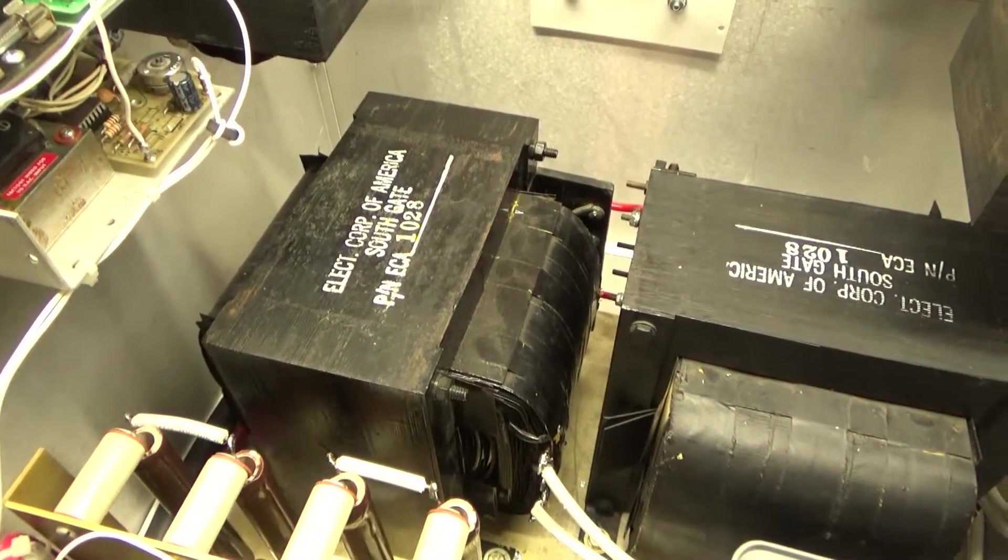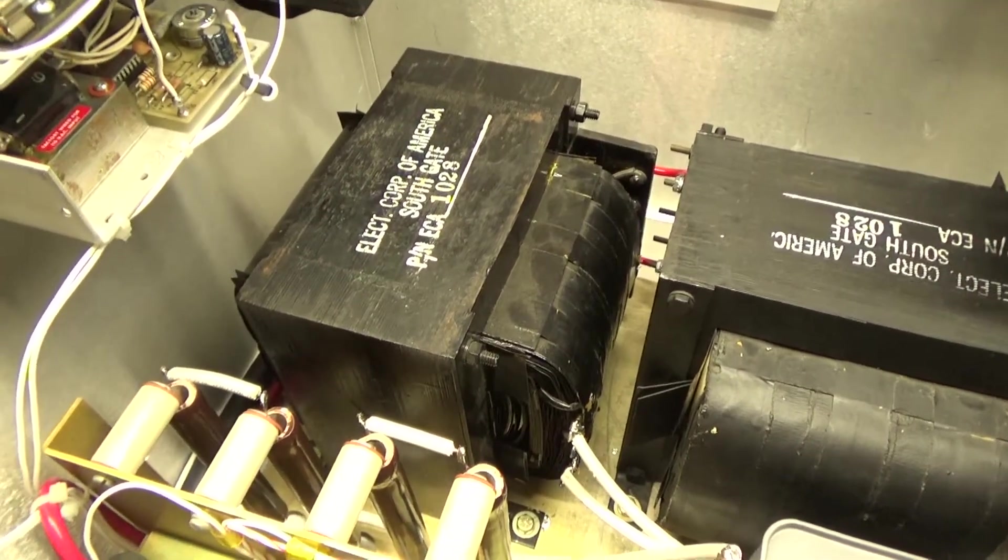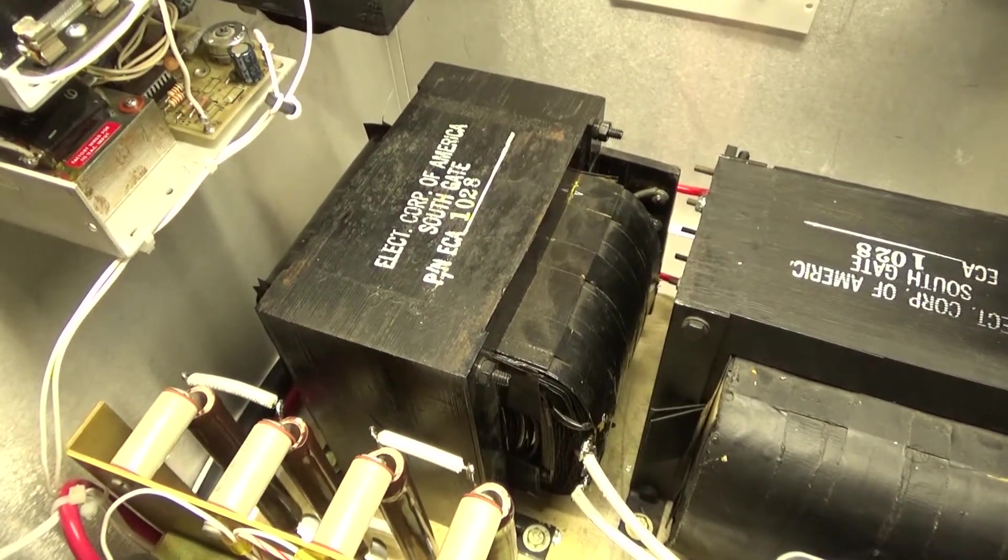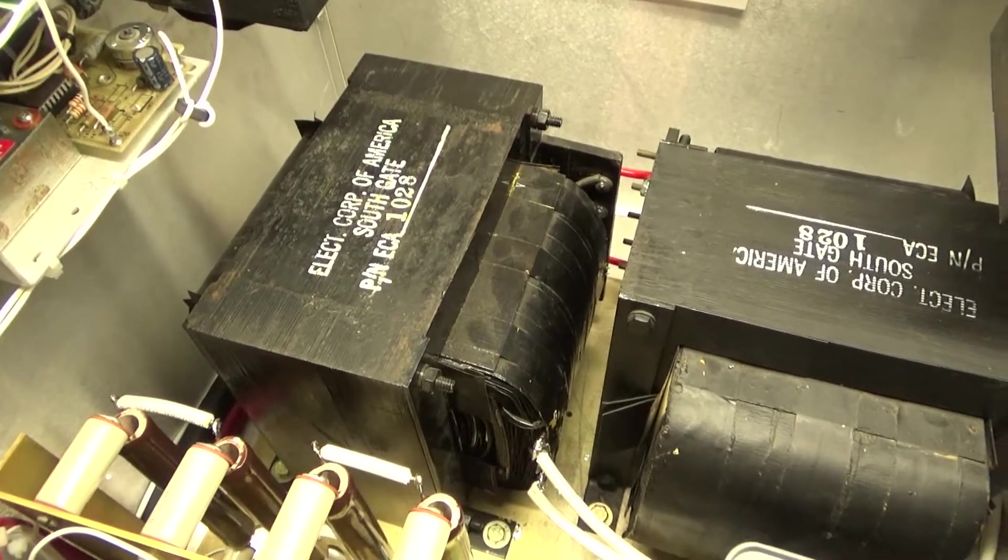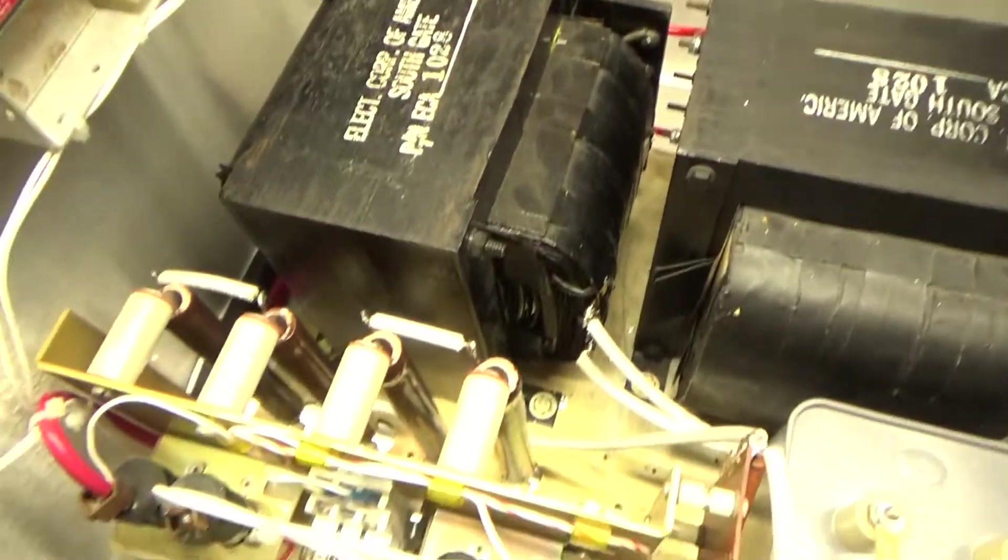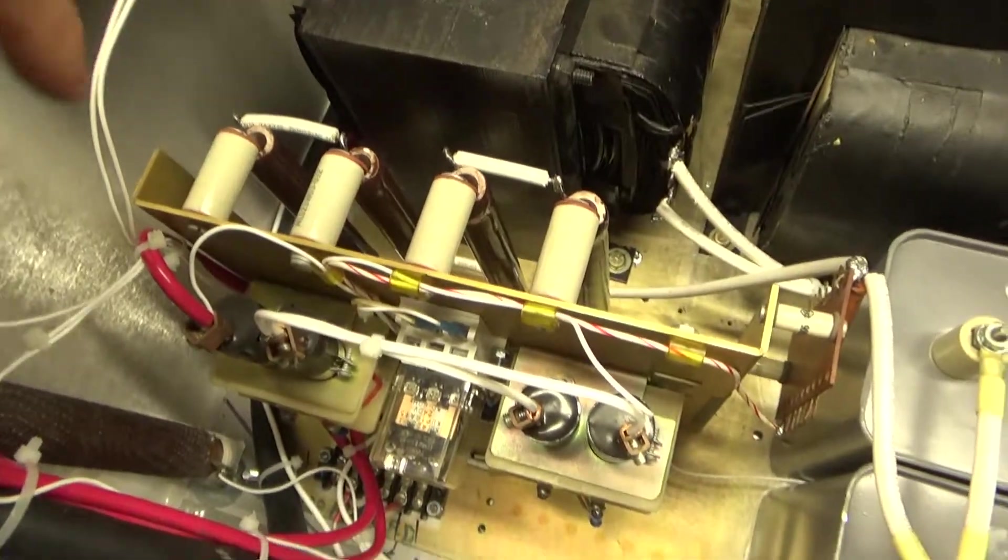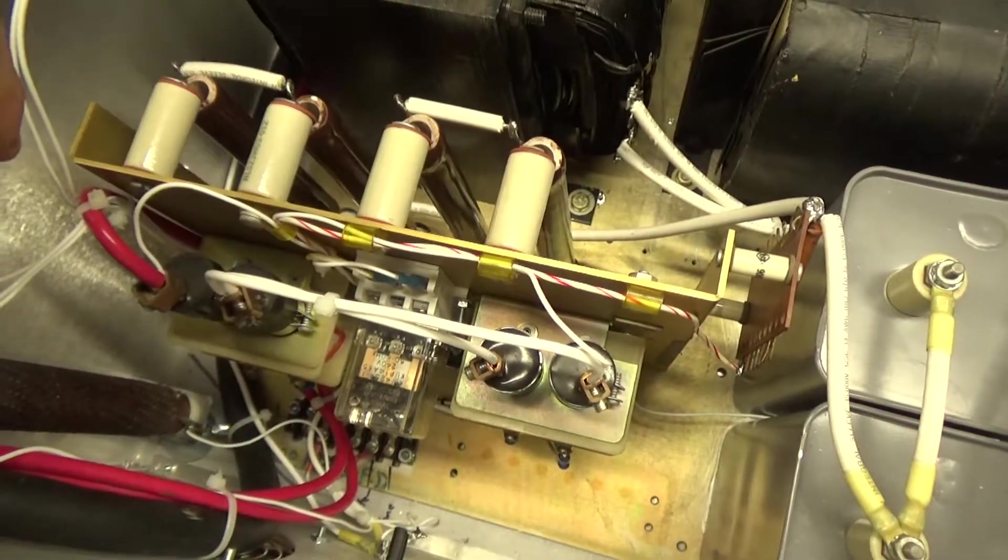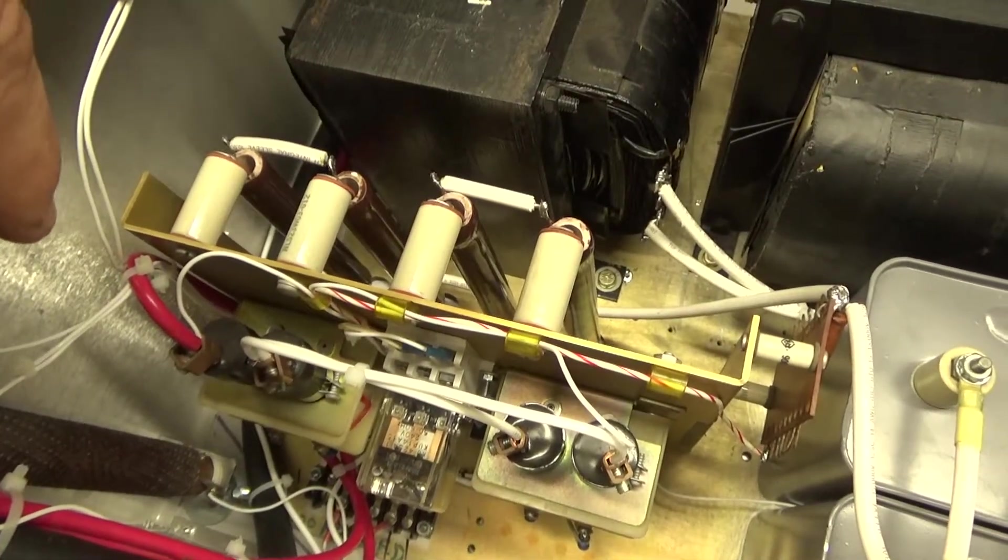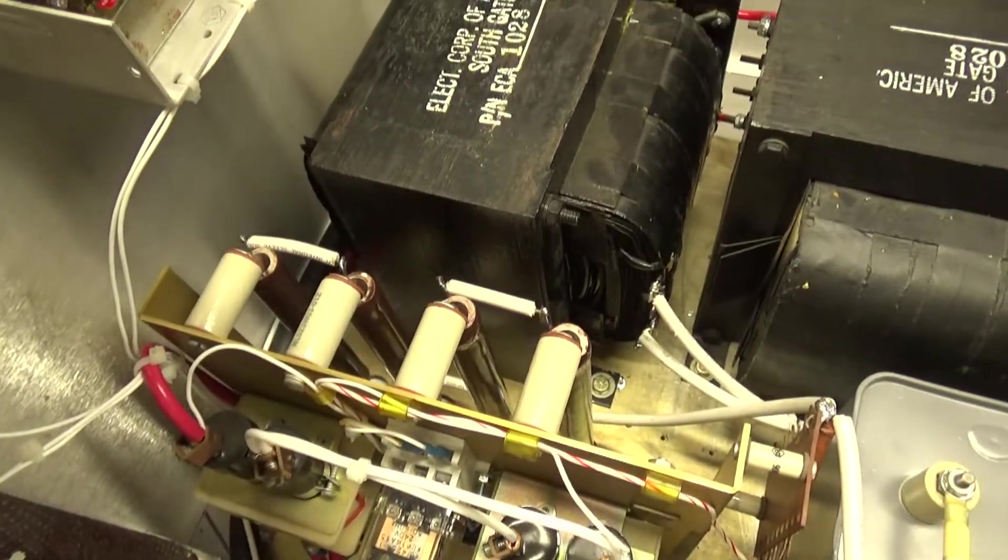The problem with that type of soft start is, if there's a short across the secondary, you have to worry about the main breaker interrupting the voltage to the primary of the plate supply. With this type of soft start, you basically have a relay with a 240 coil. You still have one contactor that, when you turn on the main switch that engages, allows one side of the primary to get the full 120.